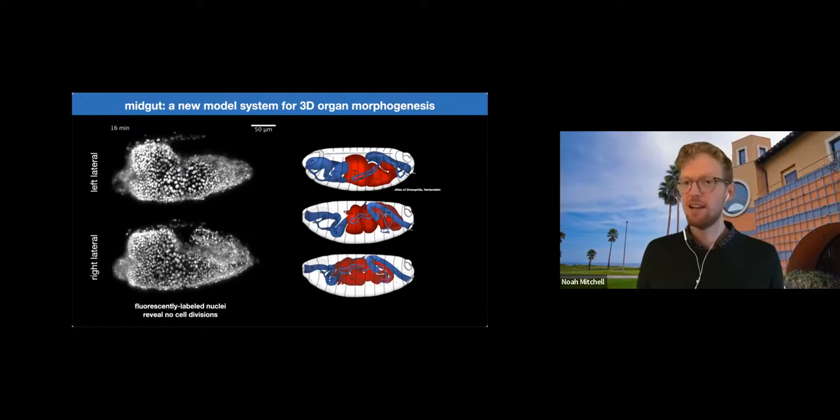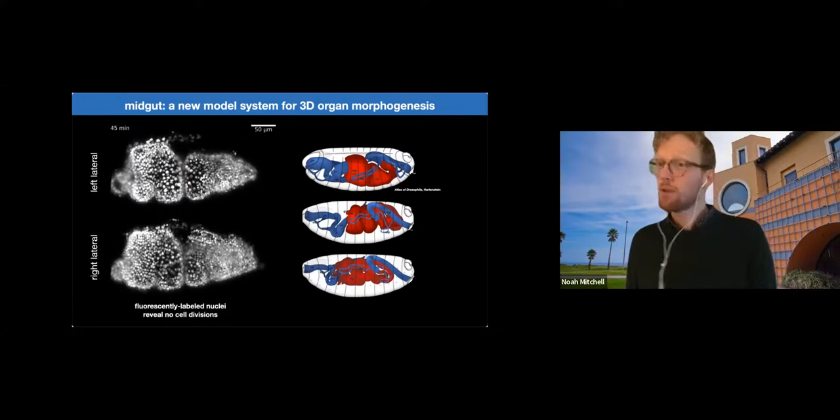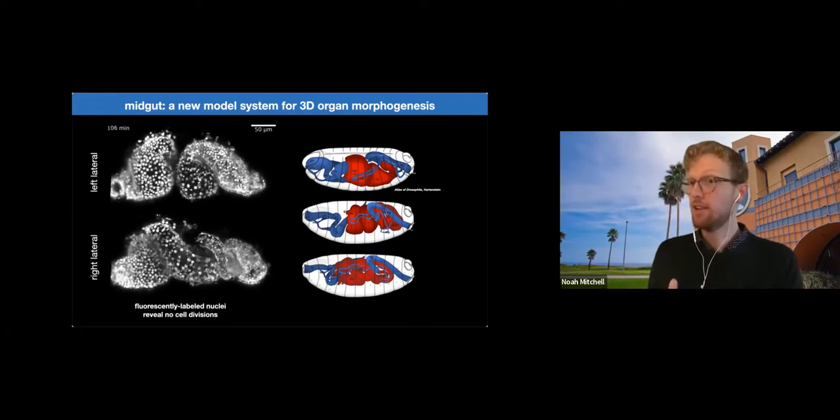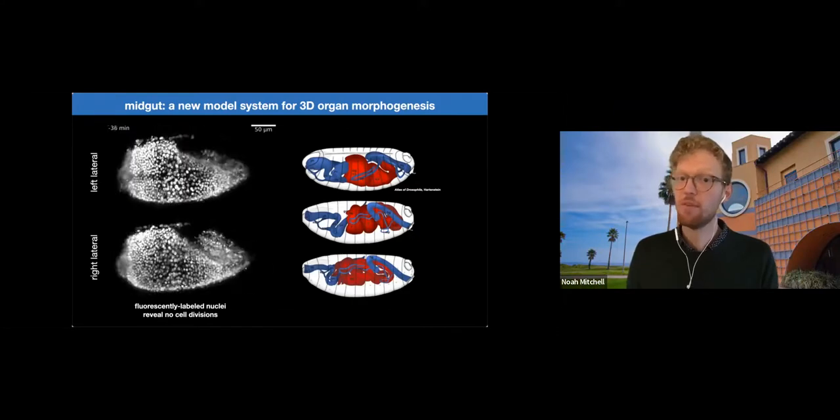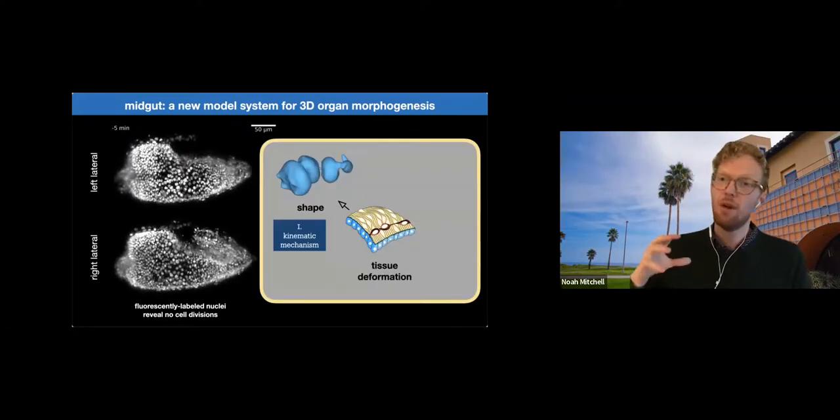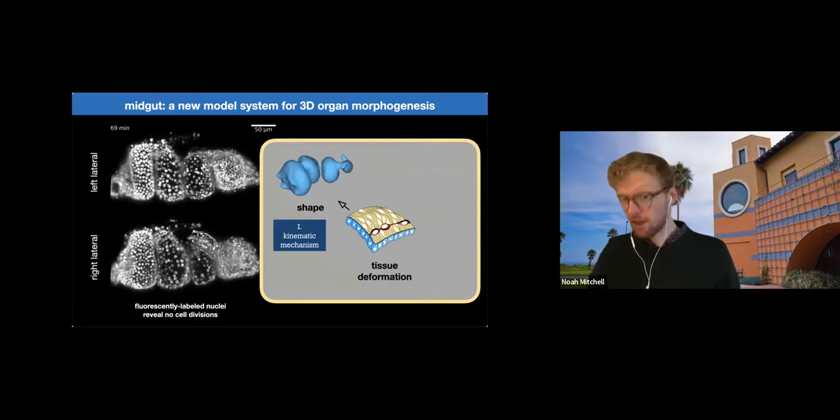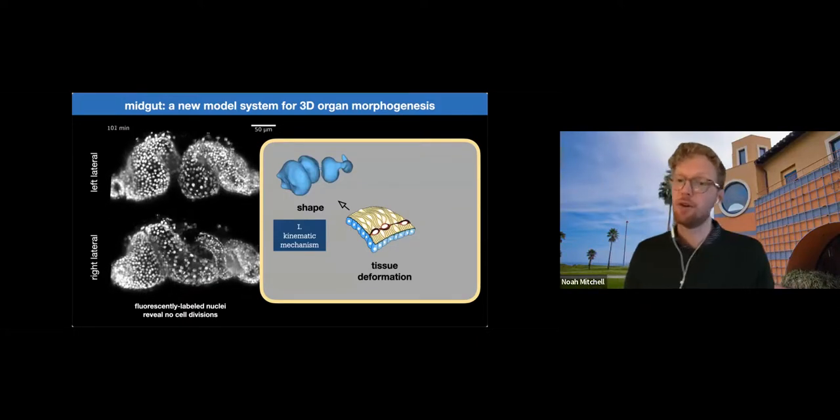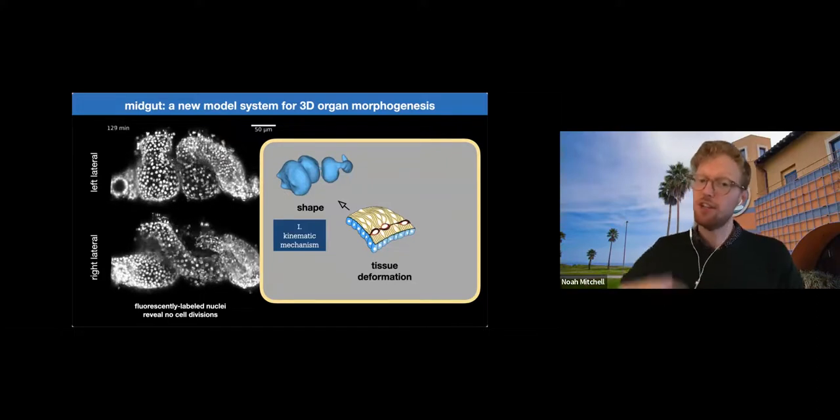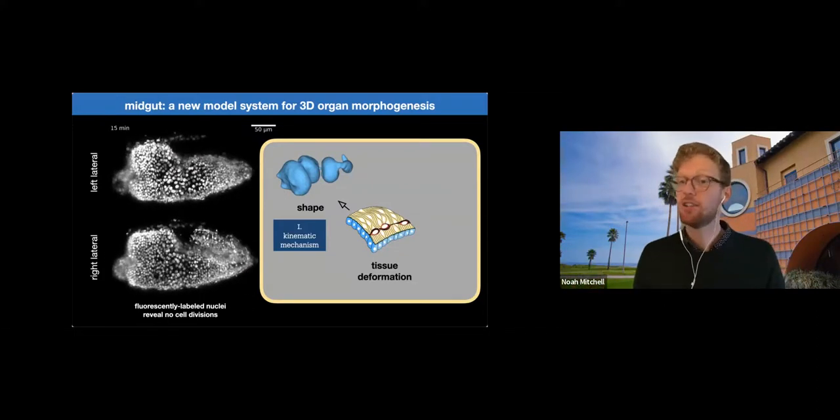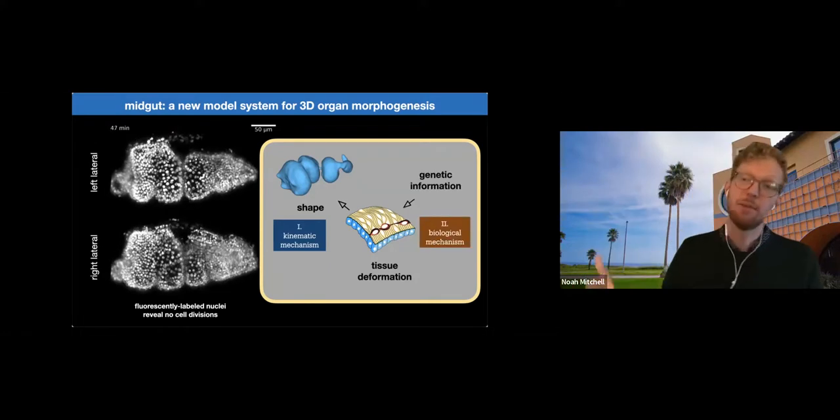So it seems this is not a system where growth leads to form, for instance, in the sense that there's no cell proliferation, but instead it's a system where tissue deformation leads to form. So our goal then is to understand how coordinated tissue deformations can generate 3D shape change in the system, and ultimately to understand the cellular mechanisms behind those deformations.